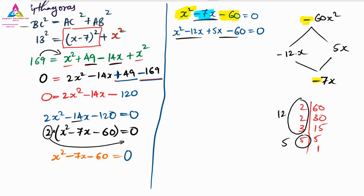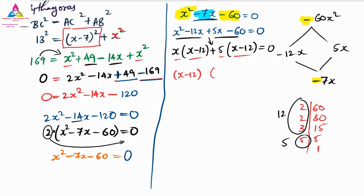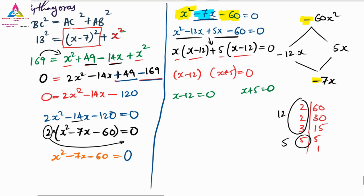Grouping: X(X minus 12) plus 5(X minus 12) equals 0. Taking (X minus 12) common: (X minus 12)(X plus 5) equals 0. So X minus 12 equals 0 or X plus 5 equals 0. Therefore X equals 12 or X equals minus 5.